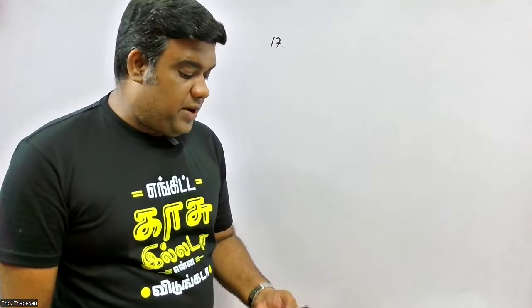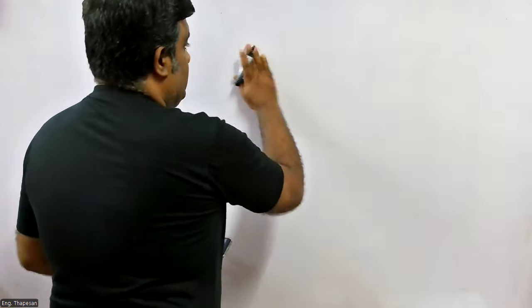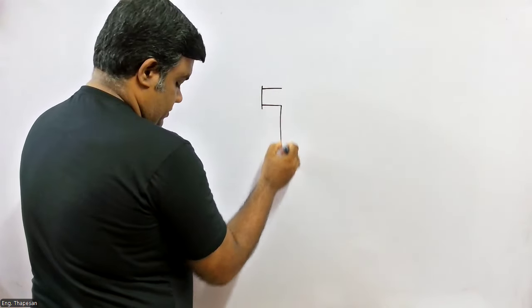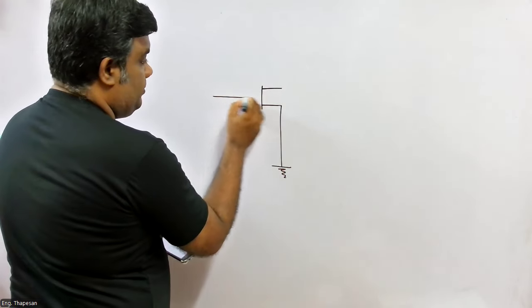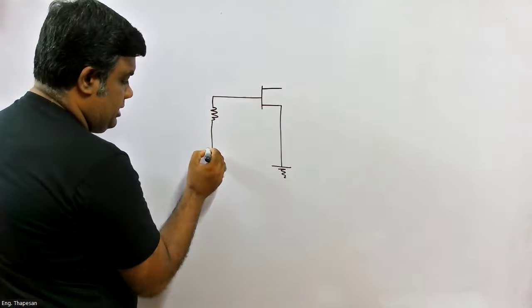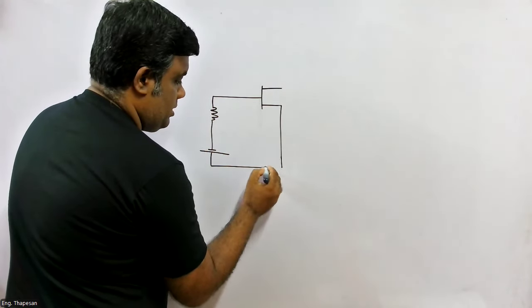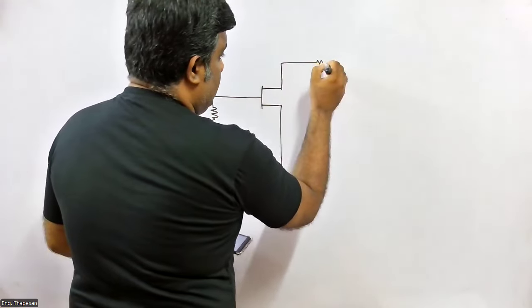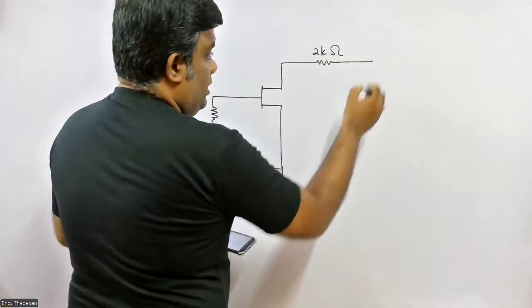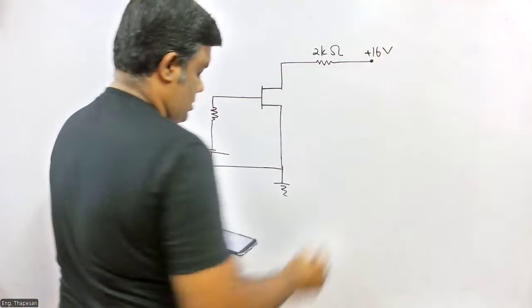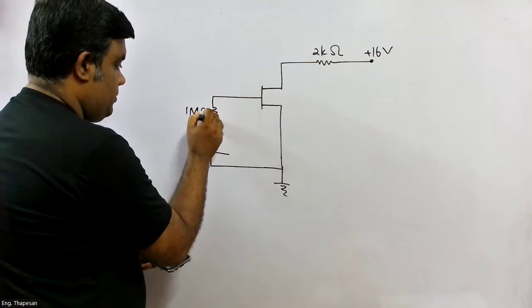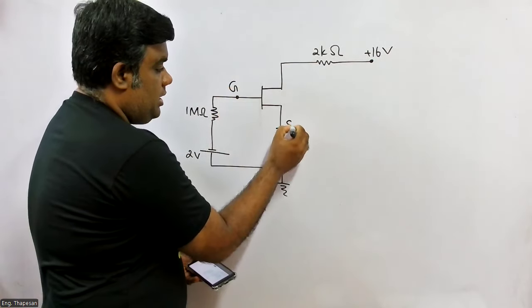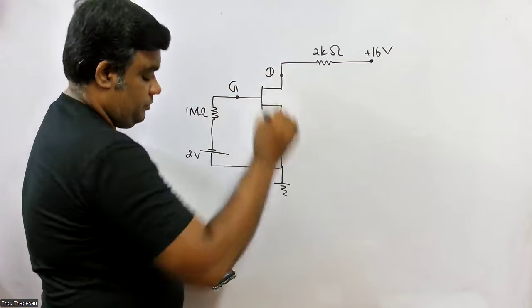So, determine the features of FAA network given below. Now, there is a field-effect transistor in FAA. This is a tree. So, here is a two-voltage bed. This is a mega-ohm. This is two-voltage. This is a gate. This is a source. This is a drain.